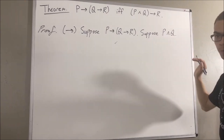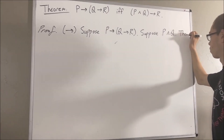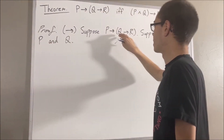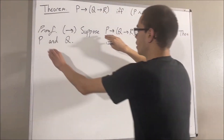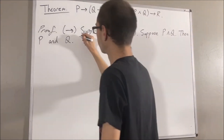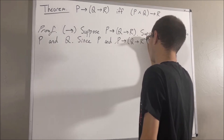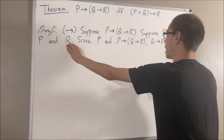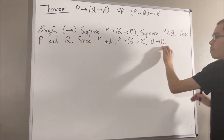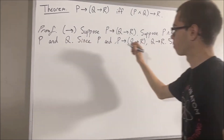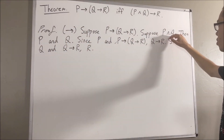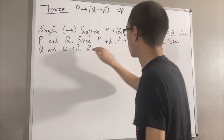Well then, P is true, and also Q is true. Now, since P is true and P implies (Q implies R), these two statements tell us that Q implies R must be true. So putting this together, we see that under the assumption that P and Q is true, it follows that R is true.